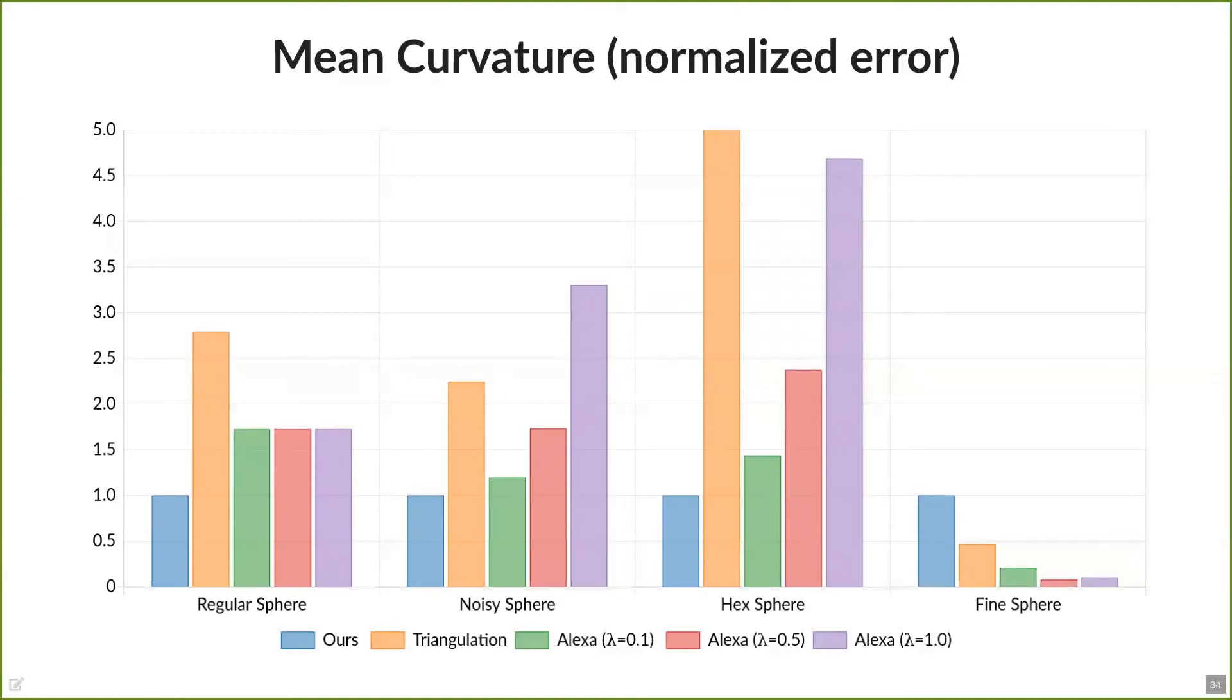In case of the curvature, we took the root mean squared error for our curvature obtained with the Laplacians versus the ground truth, as the mean curvature on the sphere is always 1. Right now, you can see the normalized error of the mean curvature, with our value always being 1. The orange bar represents triangulating the mesh and computing the typical triangle cotangent Laplacian. And as you can see, our Laplacian yields generally the smallest errors, with the exception of the fine sphere.